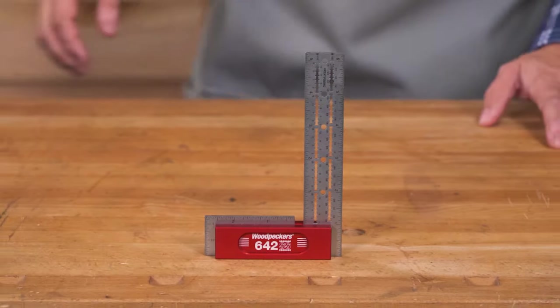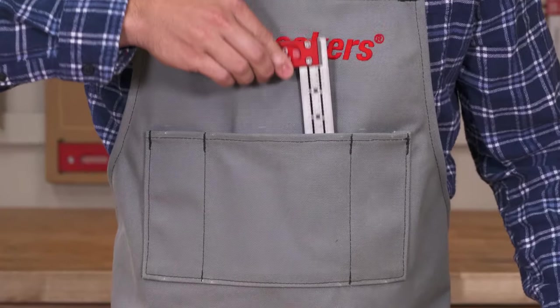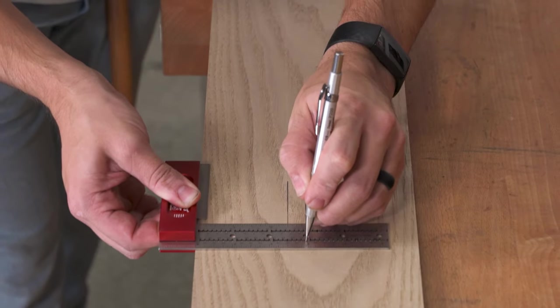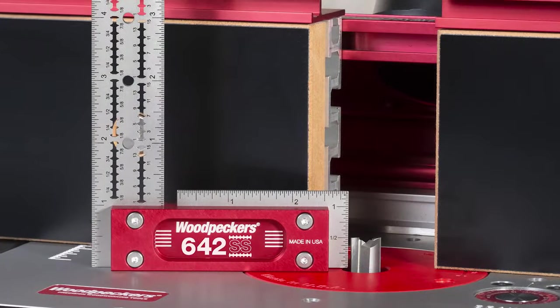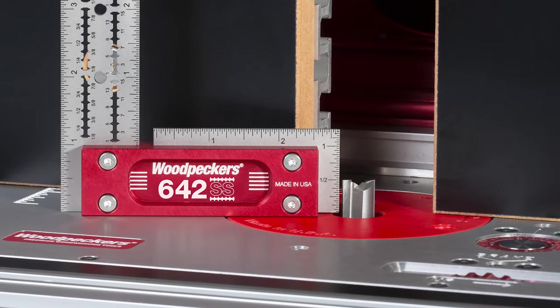The 642 SS is our most compact square and fits nicely in any pocket or tool apron. Use it to quickly lay out joinery on smaller parts or dial in the exact height of any router bit or saw blade.